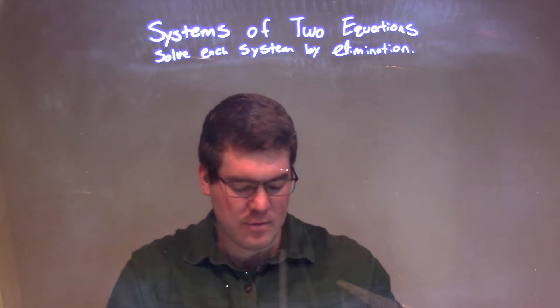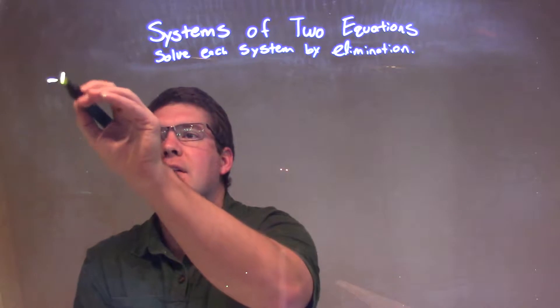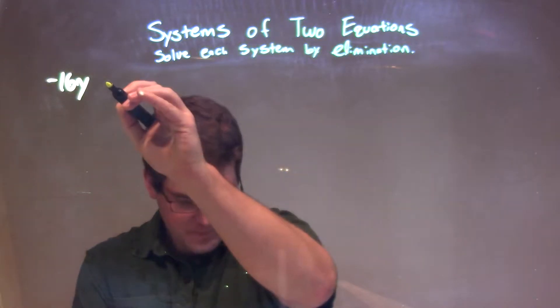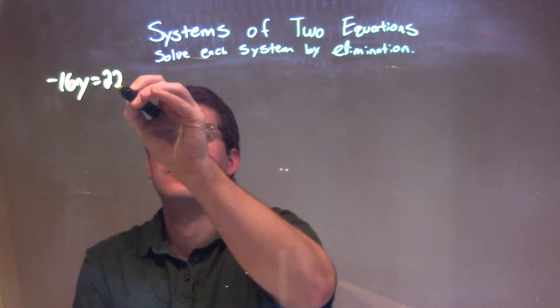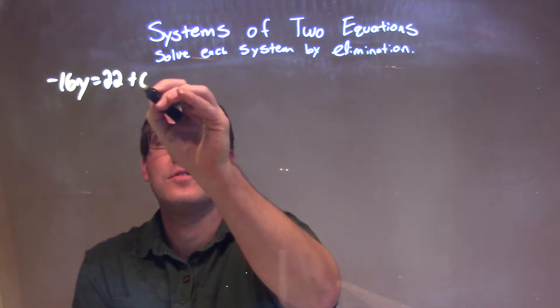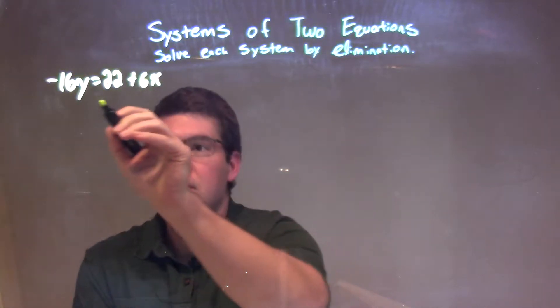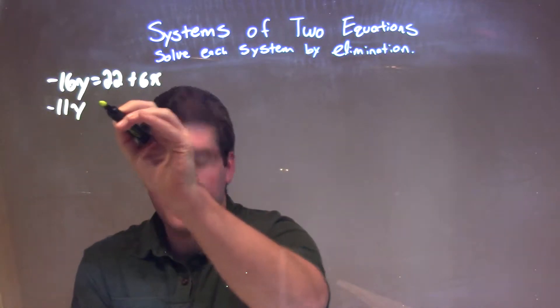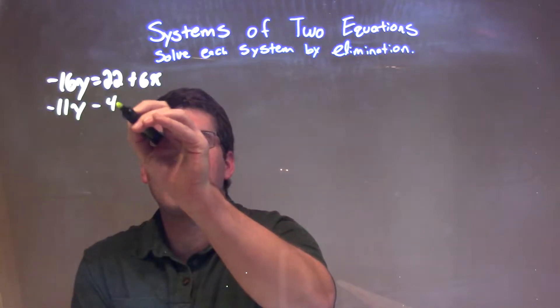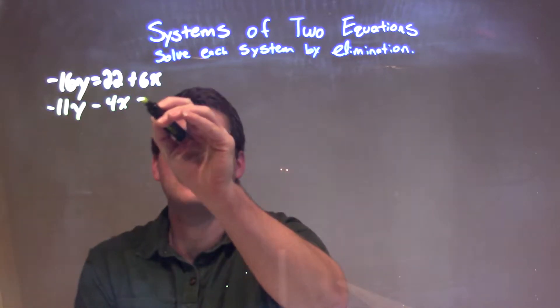I'm going to solve each system by elimination. So if I was given the system of equations: negative 16y equals 22 plus 6x. Second equation: negative 11y minus 4x equals 15.